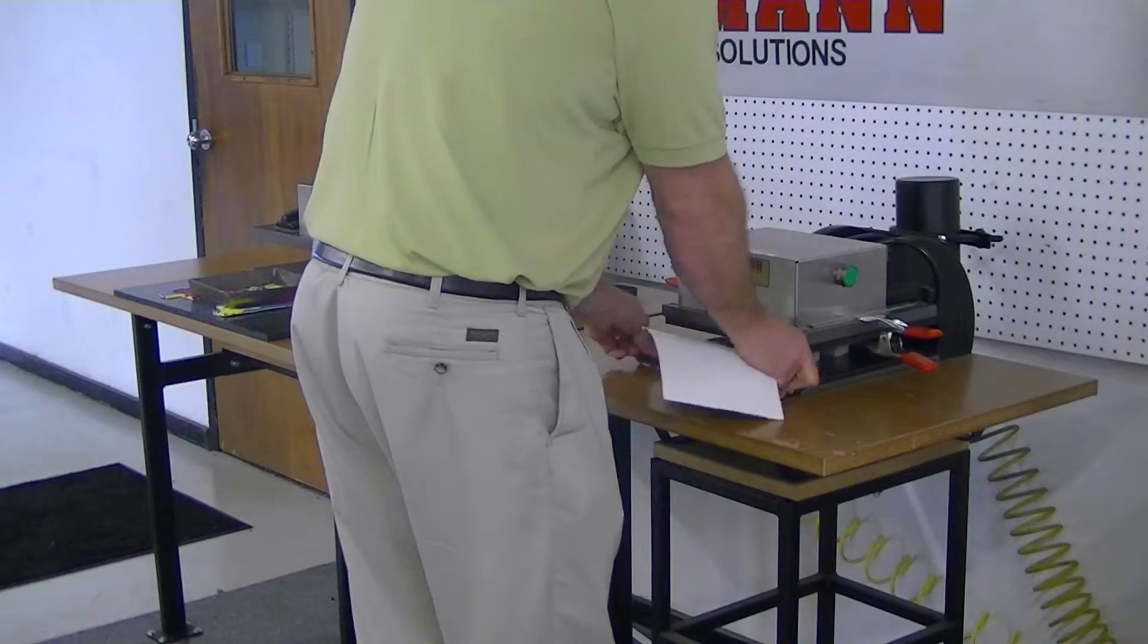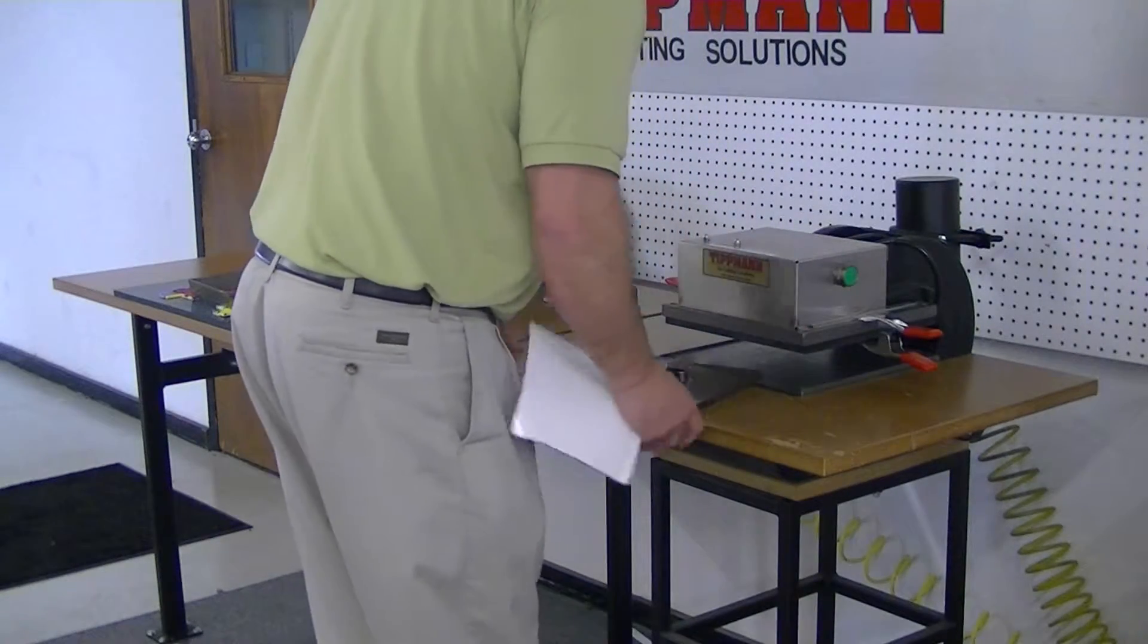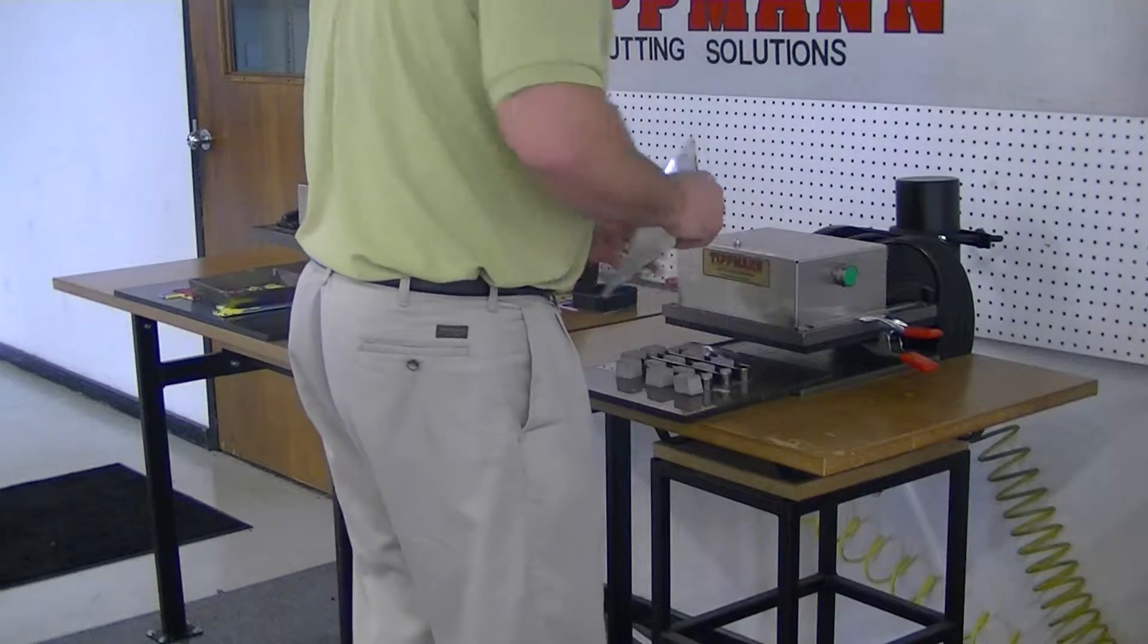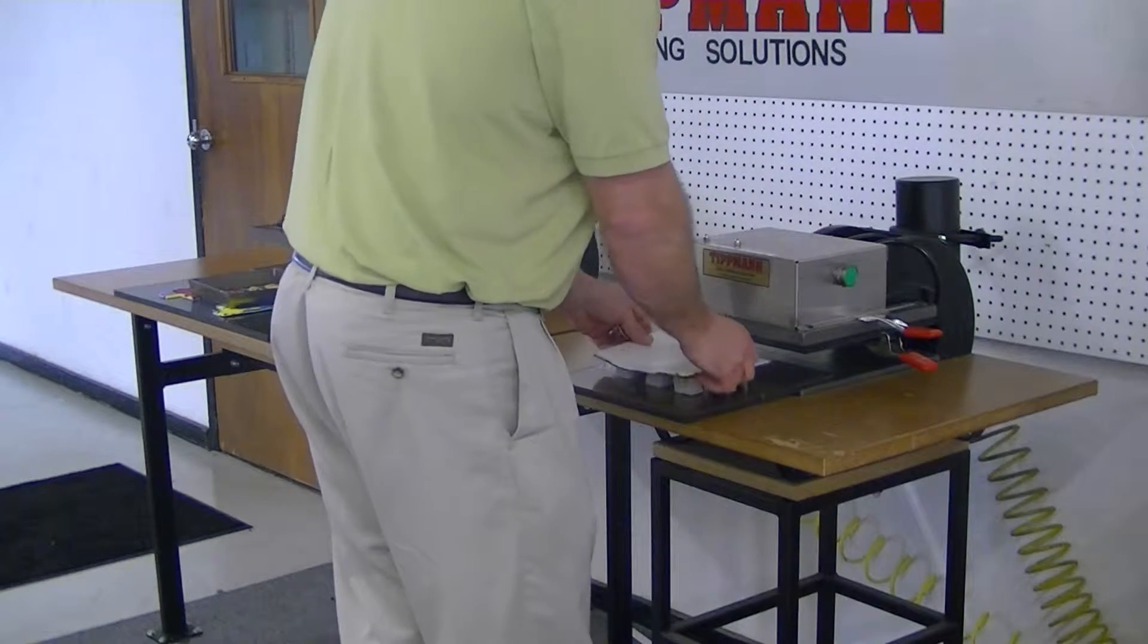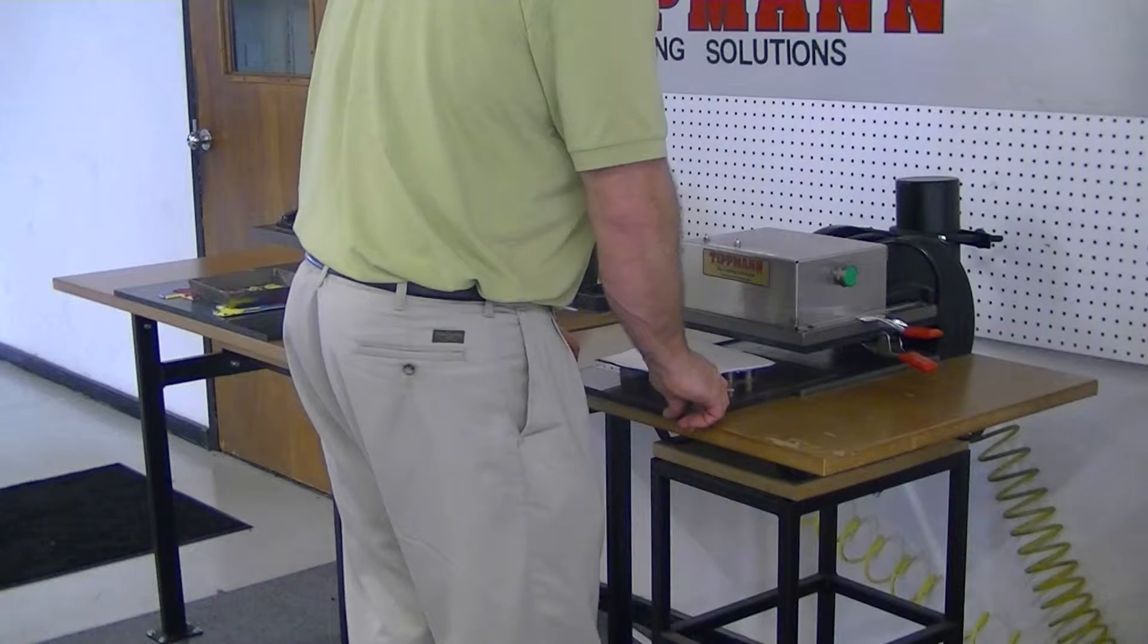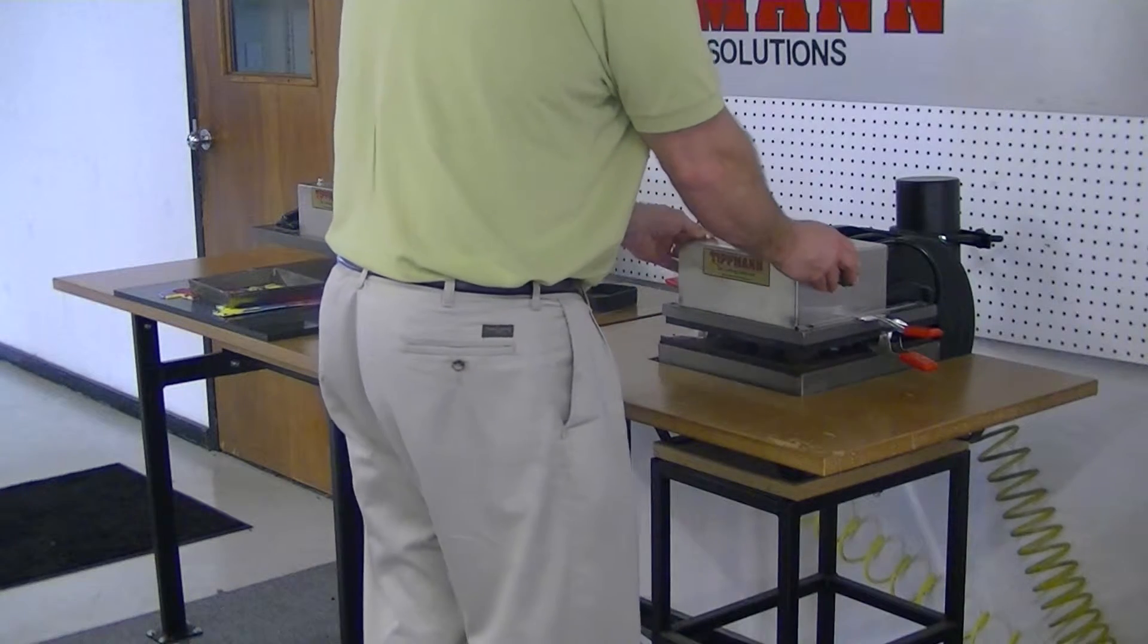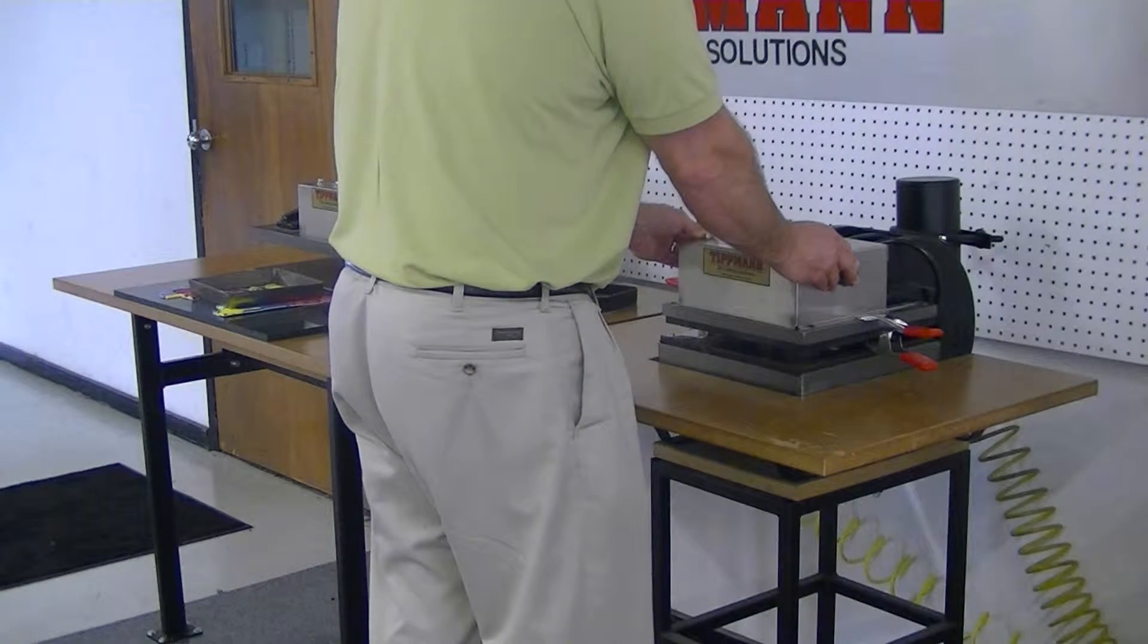So first I'll demonstrate using this steel rule die. We're going to set the material on top of the die. The die will be blade up on the bottom. We'll slide it in and then we'll hook it out. Hold it for a second.